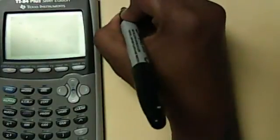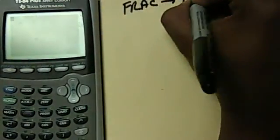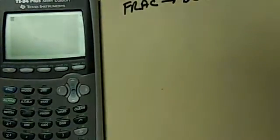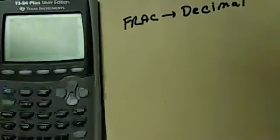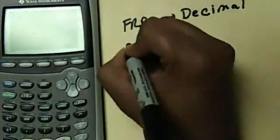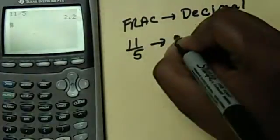So if we're going to change a fraction to a decimal, for example, let's say 11 over 5, a fraction into a decimal, the calculator automatically switches 11 over 5 if you just type it into a decimal, which is 2.2.